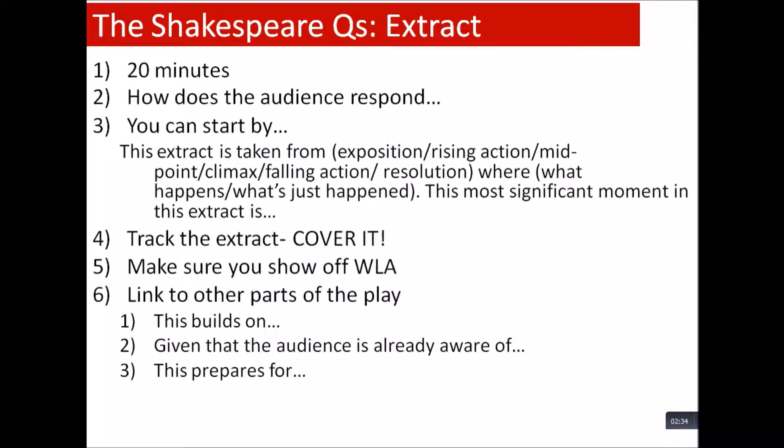If you're linking to future parts of the play, you can say 'this prepares the audience for...' or 'this effectively foreshadows...' In Romeo and Juliet, when the Prince declares he will place death upon whoever disturbs the peace again, this prepares for the consequences of Romeo's actions when he kills Tybalt. In Othello, Othello's signs of insecurity in Act 1 Scene 3 — that he's not blessed with the soft parts of speech — prepares us for the impact Iago can have on him and how his insecurities make him more susceptible.